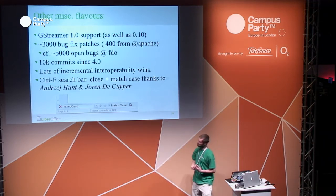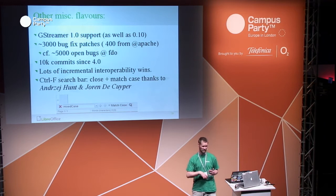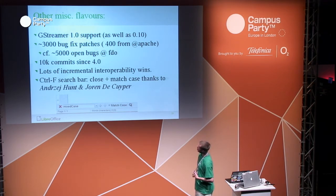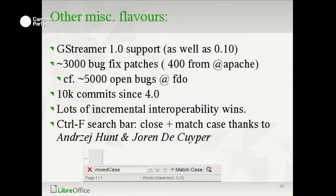There are lots of other things you can't see — 3,000 bug fixes are hard to show one by one. We have around 5,000 open bugs. We're pleased with 3,000 commits with bug fixes in the latest release, along with gStreamer support for the latest version. Something like 10,000 commits in the last six months from a very diverse group of people.